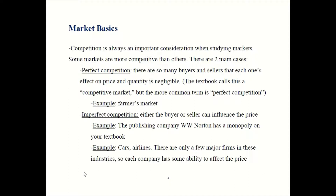The amount of competition in a market is an important factor in our analysis. For now we'll look at two main cases, though we'll later break it down to four. The first case is perfect competition, where you have tons of buyers and tons of sellers, and each individual buyer and seller is so small they can't really influence price on their own. Your book calls this a competitive market, though the more common term is perfect competition. A close real-world example is a farmer's market — lots of small farmers, no single one able to influence price significantly, and lots of buyers each too small to impact price either.